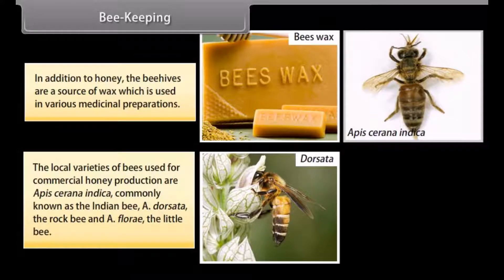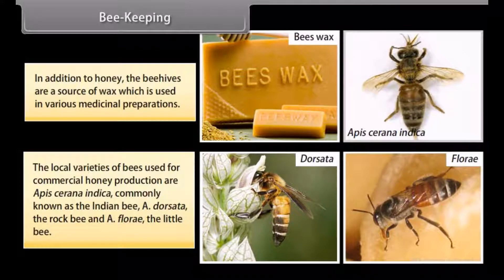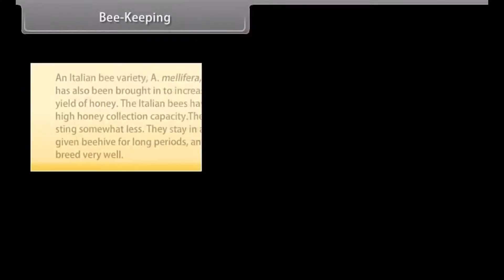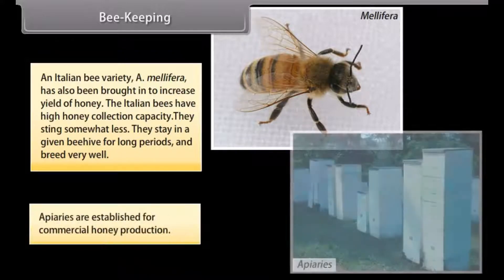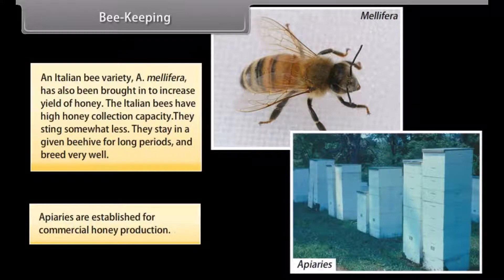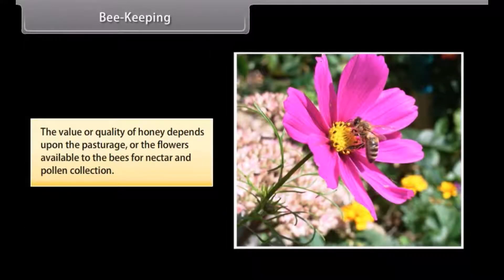Other local bee varieties include A. florea, the little bee. An Italian bee variety, A. mellifera, has also been introduced to increase honey yield. The Italian bees have high honey collection capacity, stay in a given beehive for long periods and breed very well. Apiaries are established for commercial honey production. The quality of honey depends on the pasturage — the flowers available to the bees for nectar and pollen collection.